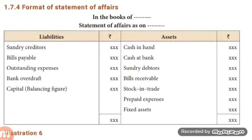The format of the statement of affairs is shown here. It is not an account but a statement, so we should not prefix entries with the words 'to' and 'by.' It is a T-shaped statement — divided into two equal halves. All liabilities are recorded on the left-hand side and all assets on the right-hand side. When balancing this statement, the balancing figure obtained is the capital. So the statement of affairs is used to calculate the capital of the business.